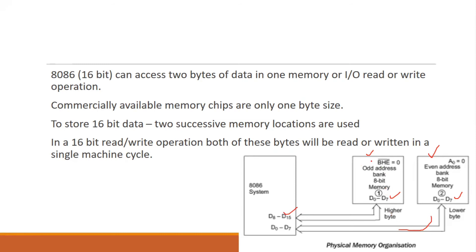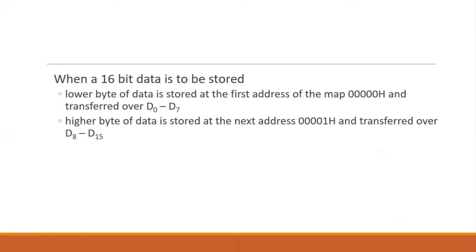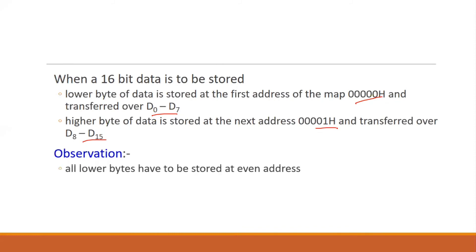We choose the even bank based on two pins: BHE (Bus High Enable) and A0. When 16-bit data is to be stored, the lower byte of data is stored at the even address (D0 to D7), and the higher byte (D8 to D15) is stored at the next address — the odd bank. All lower bytes are stored at even addresses and all higher bytes are stored at odd addresses.